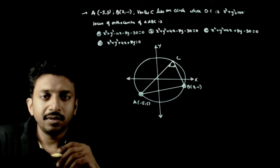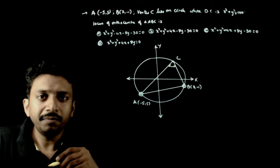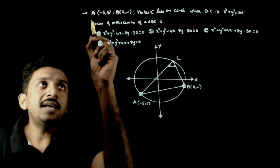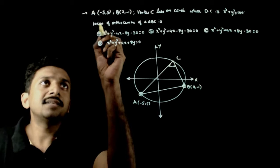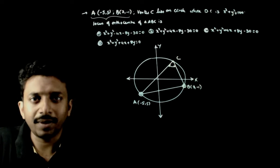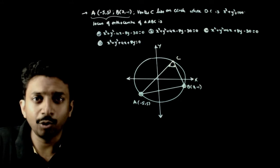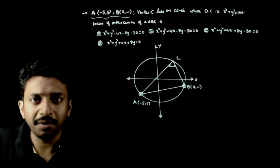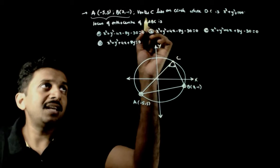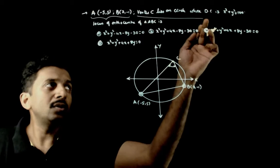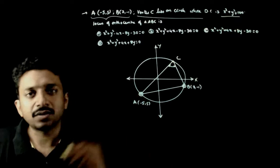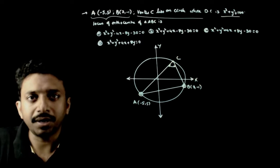Welcome students. In this question, we are given A is equal to minus 5 comma 5 and B is 7 comma minus 1. We have two points A and B. The vertex C lies on a circle whose director circle is x square plus y square is equal to 100.